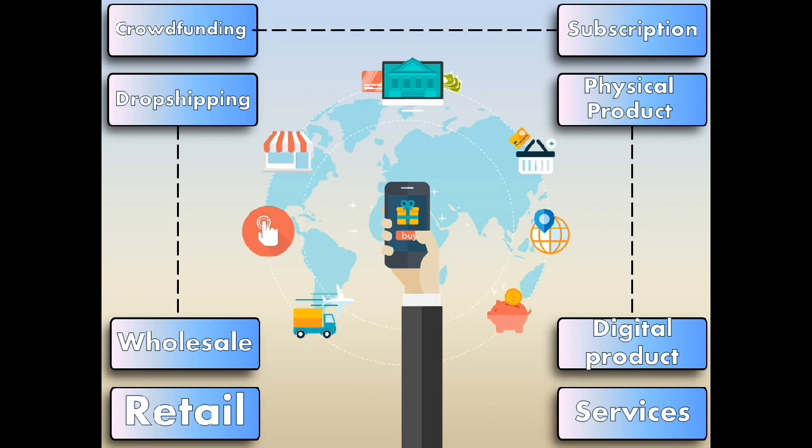Second is Wholesale — the sale of products in bulk, often to a retailer who then sells them directly to consumers. Third is Dropshipping — the sale of a product which is manufactured and shipped to the consumer by a third party. Fourth is Crowdfunding — the collection of money from consumers in advance of a product being available, in order to raise the startup capital necessary to bring it to market.